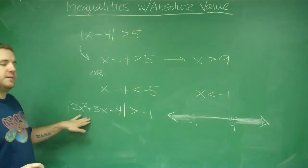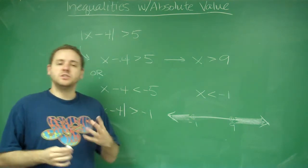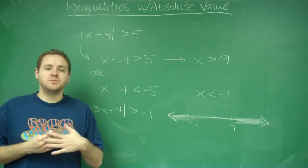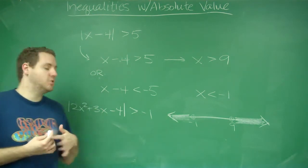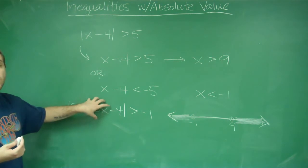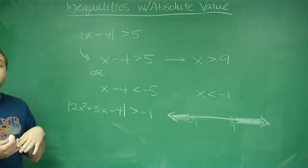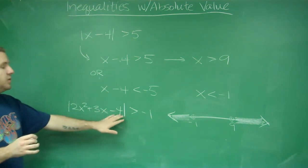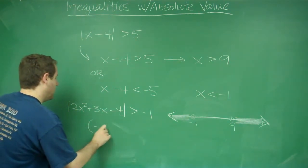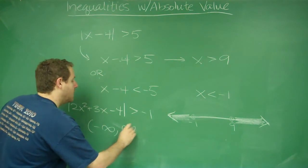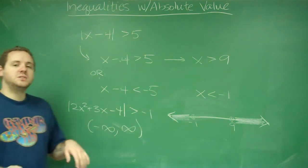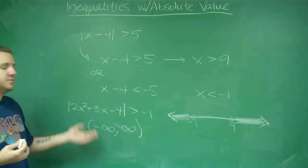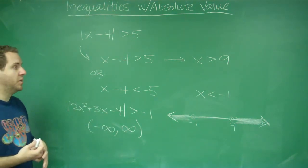If you had a problem like this come up, you actually don't need to do anything for this problem. Because keep in mind what absolute value means. Absolute value always makes anything positive. So no matter what is in here, the absolute value is going to make it positive. And no matter what that is, it's always going to be greater than negative 1. So just by looking at this, you could say in interval notation, the solution to this is all real numbers, negative infinity to infinity. Because no matter what you have in an absolute value, it's always going to be greater than negative 1.